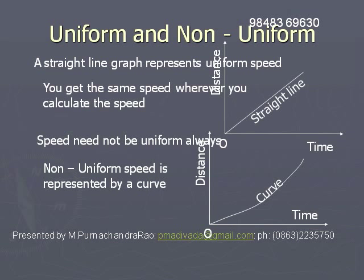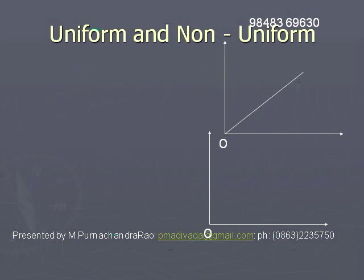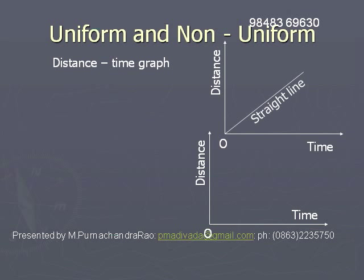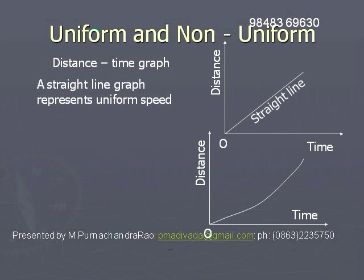As shown in the graph, if the relation between time and distance is a curve, that means the speed is not uniform — a non-uniform speed is represented by a curve. In the distance-time graph, a straight line represents uniform speed, and a curve represents non-uniform speed.